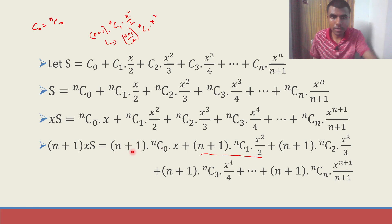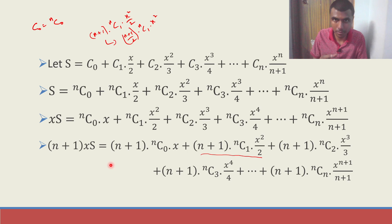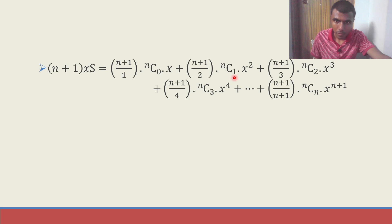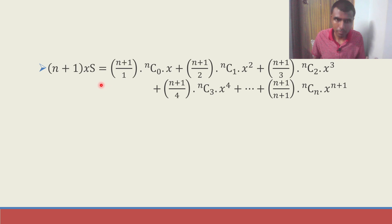Also I am writing the first term (n+1) as (n+1) by 1, because I am trying to construct a pattern here. So: by 1 is here for the first term, by 2 came here for the second term, by 3 here, by 4 here — I am building a pattern.